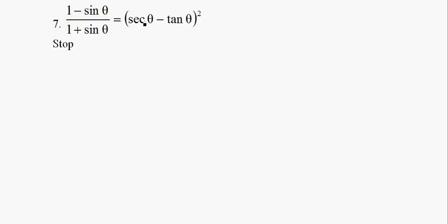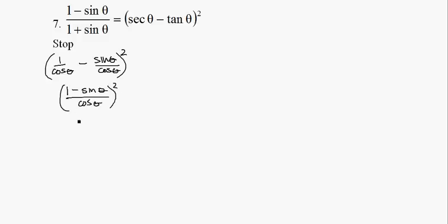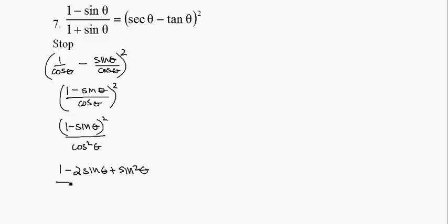Okay, so our more interesting side is the left-hand side. I'm going to change everything into sines and cosines. So I have (1 over cosine theta minus sine theta over cosine theta) quantity squared. I have a common denominator so I can subtract. I'll rewrite it as (1 minus sine theta) squared over cosine squared theta. Expanding: 1 minus 2 sine theta plus sine squared theta, all over cosine squared theta. I need to have a (1 minus sine) in the numerator, and I know I can rewrite cosine squared as 1 minus sine squared.